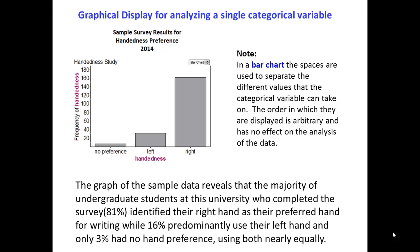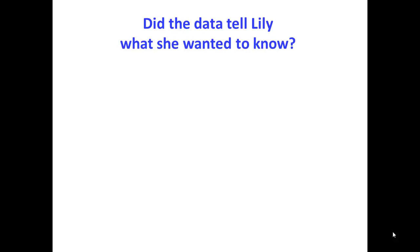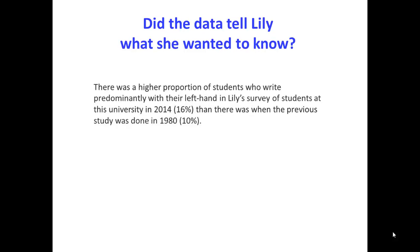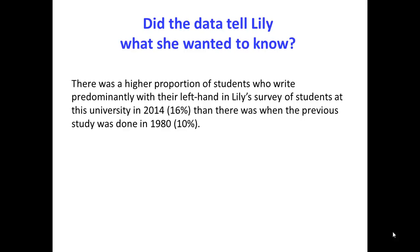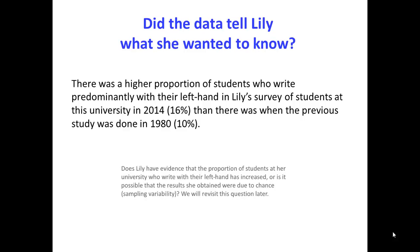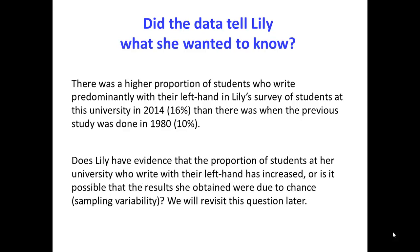Note that we could have also used a pie graph to display the handedness preference. Did the data tell Lily what she wanted to know? There was a higher proportion of students who write predominantly with their left hand in Lily's 2014 survey — 16% — than in the previous 1980 study — only 10%. Does Lily have evidence that the proportion has increased? Or is it possible that the results she obtained were due to chance, i.e., sampling variability? We will revisit this question later.